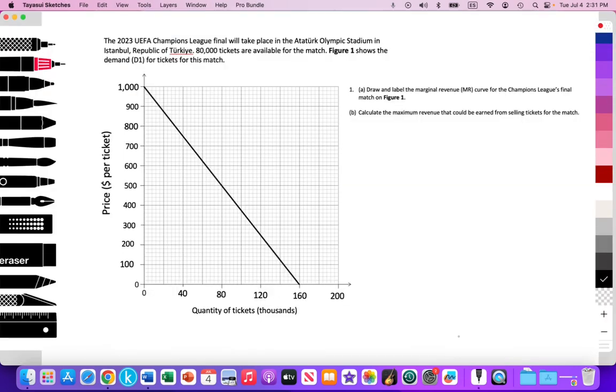This is the question we're going to look at in this video. The 2023 UEFA Champions League final, which took place at the Atatürk Olympic Stadium. We have 80,000 tickets that were available for this match. And the figure below illustrates our demand curve for this particular match. On the y-axis, we're measuring price per ticket, going from zero to $1,000 per ticket.